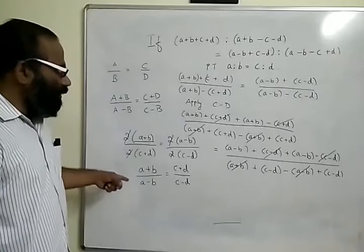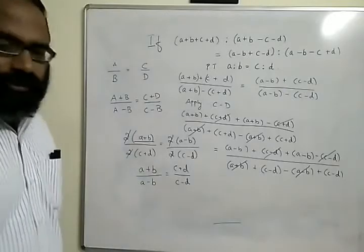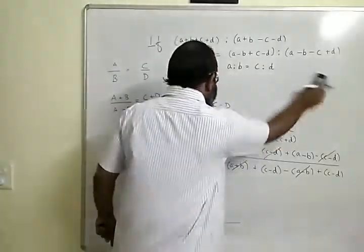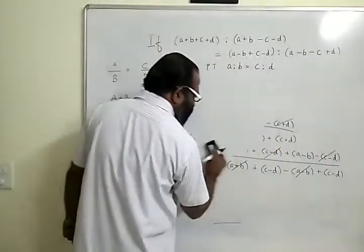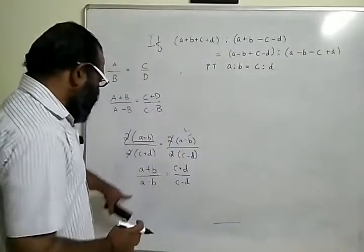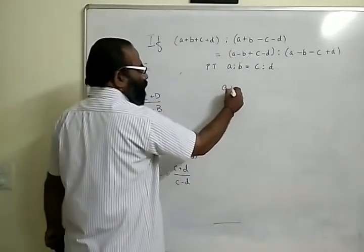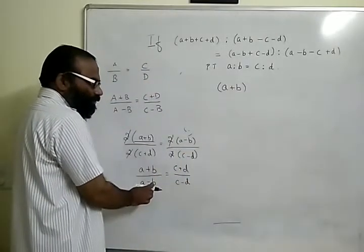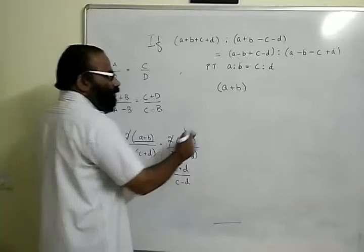Now let us again use componendo dividendo. I will just remove this, I hope you have taken it down, or you can just see it once again. So a plus b... I can write this componendo dividendo, so adding the denominator and subtracting it below: a plus b plus a minus b by a plus b minus of a minus b.